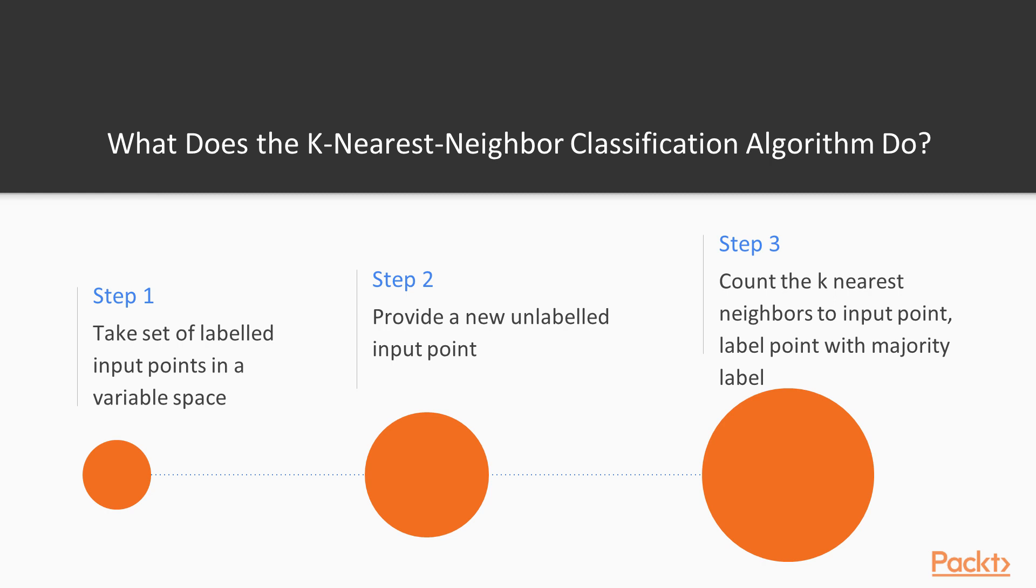So what does the k-nearest neighbor classification algorithm do? It takes a set of labeled input points in a variable space. We provide a new unlabeled input point, and we count the nearest neighbors to the input point and label that point with the majority label.